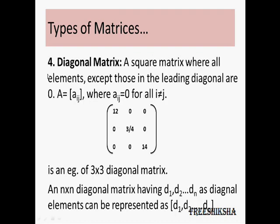Next you have the diagonal matrix. It's a square matrix where all the elements except those in the leading diagonal are equal to 0. The leading diagonal starts from i=1 and j=1 — all elements of this leading diagonal are non-zero, and all elements apart from the leading diagonal are equal to 0.